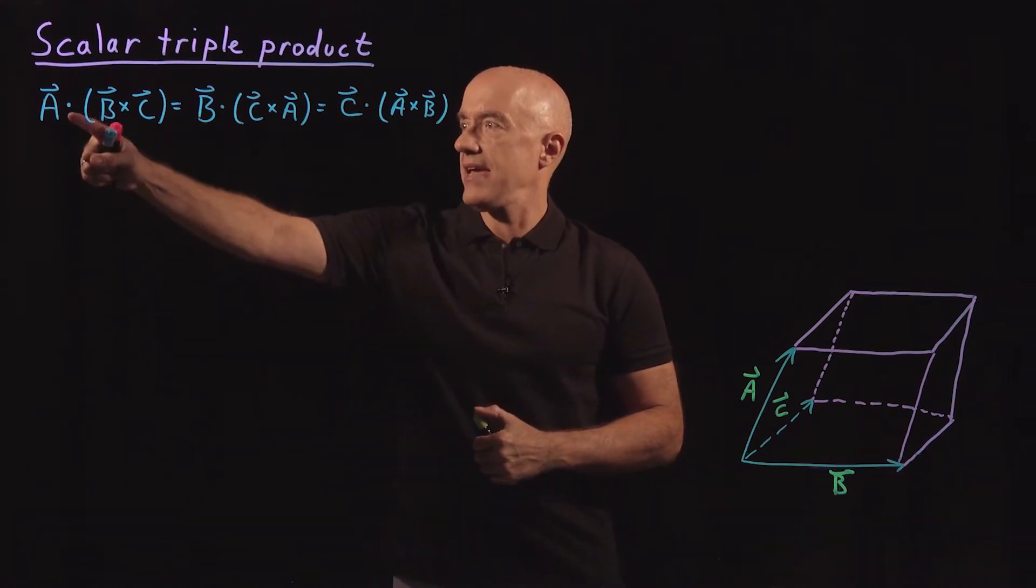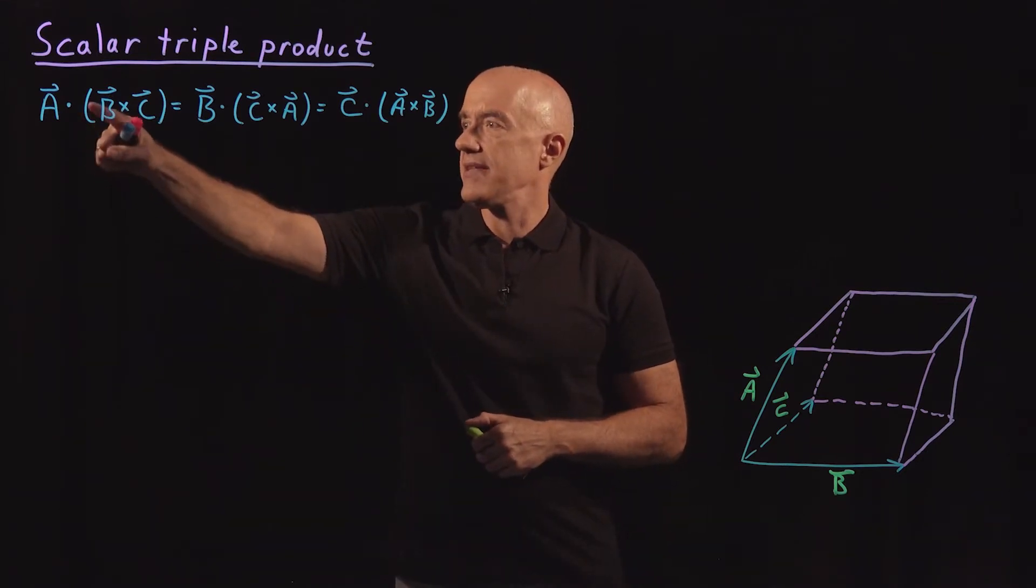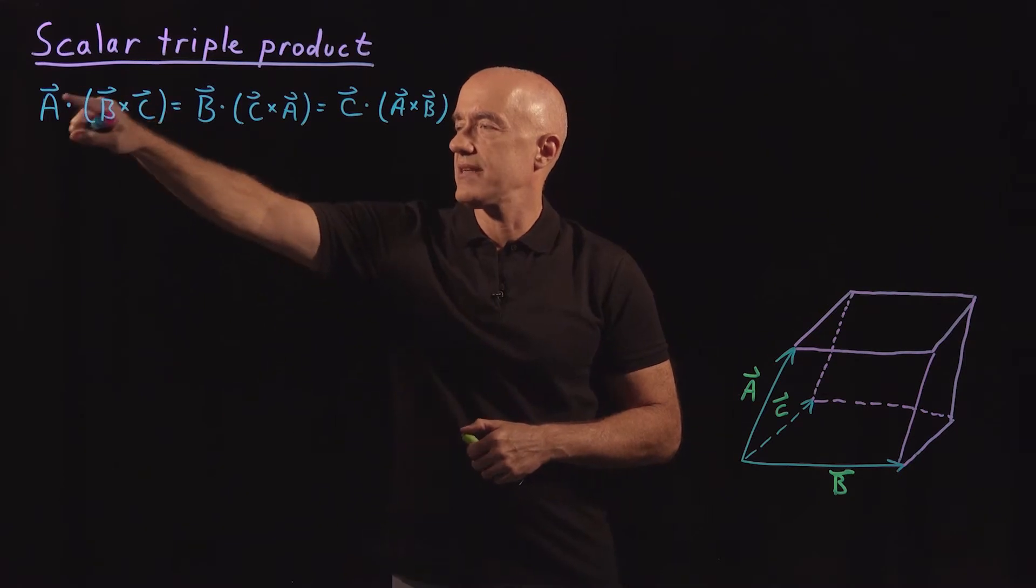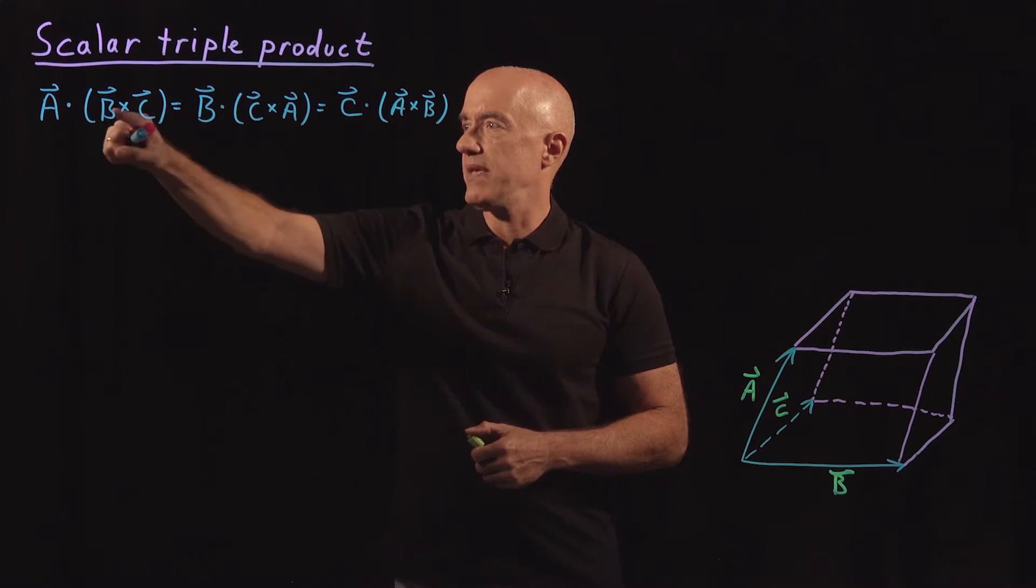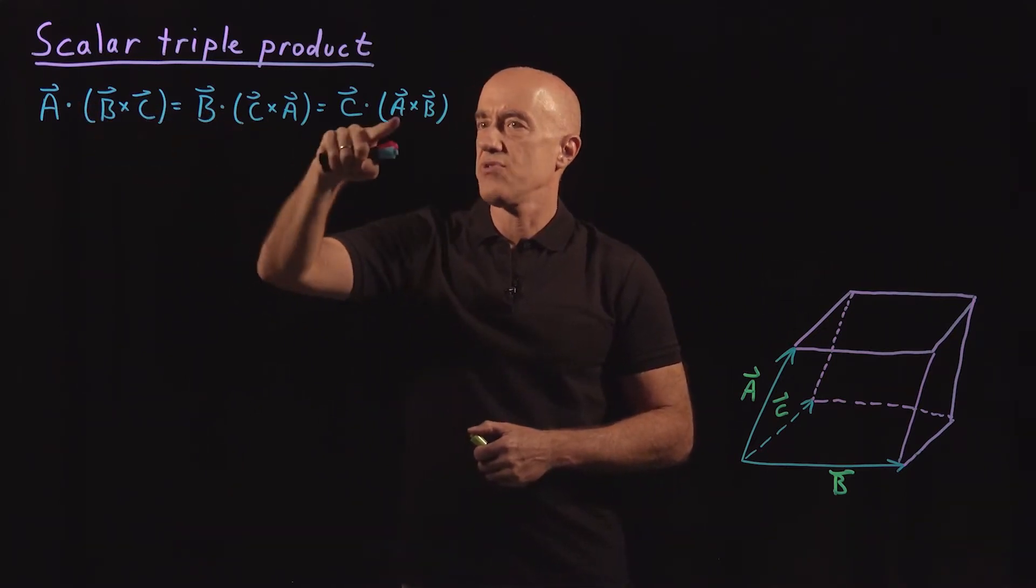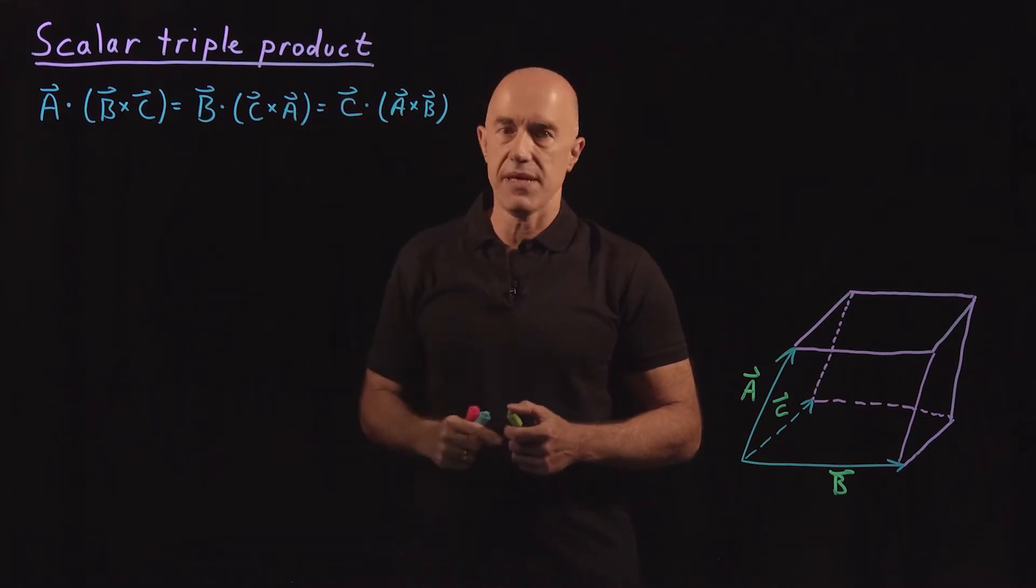It's A, so three vectors A, B, and C. A dot B cross C is equal to, then you can do a cyclical permutation of A, B, and C. So you can move B in the front, B dot C cross A. And then you can move C in the front, C dot A cross B.